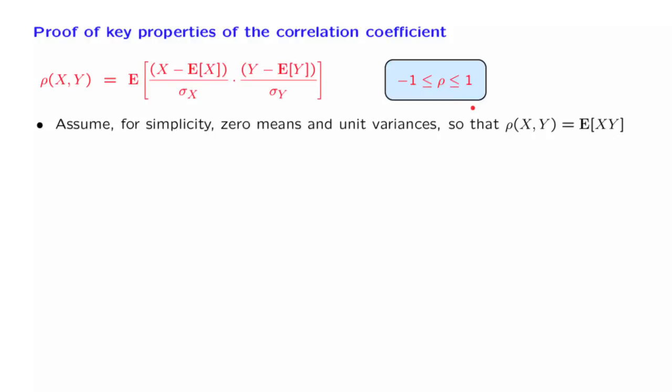What we will do is consider this quantity E[(X - ρY)²] and expand this quadratic and write it as expected value of x squared. Then there's a cross term, which is minus 2 ρ, the expected value of x times y, plus ρ squared, expected value of y squared.